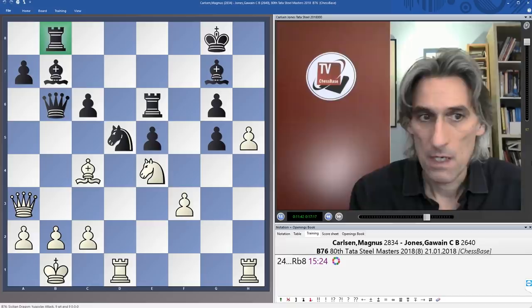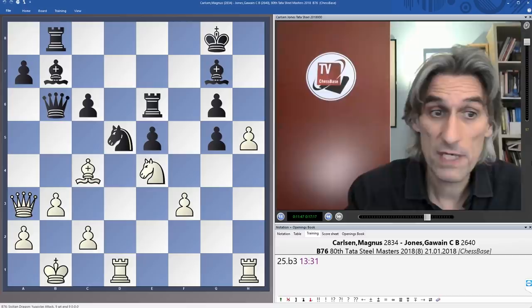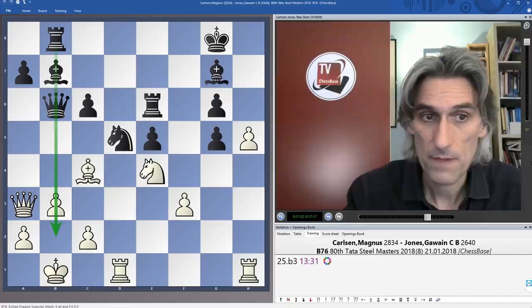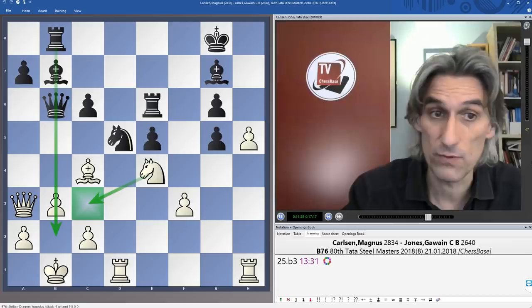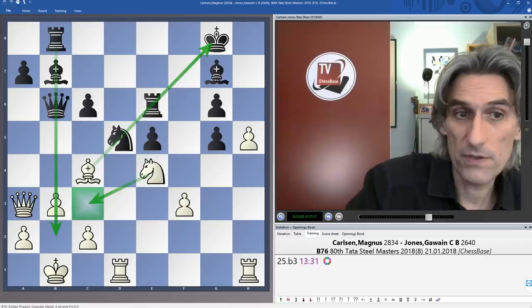Carlsen played a very practical move here, b3. He could have taken on g5, but a really practical move, just stopping any threats on the b-file. And it doesn't so matter about the weakness of the c3 square, because that's covered by the knight, but also it's going to be very difficult for black to escape from this pin as well.